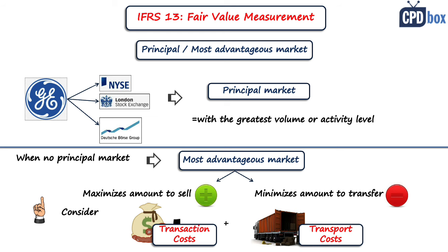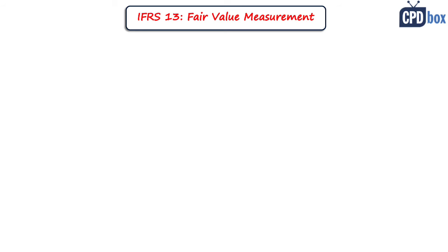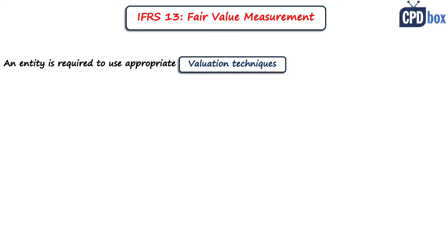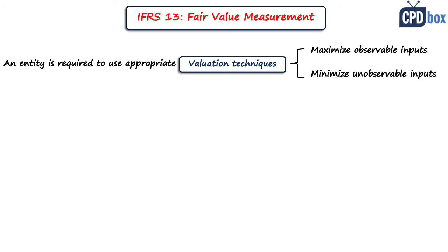IFRS 13 also provides guidance on market participants, orderly transactions, and how to set fair value on initial recognition. Regarding valuation techniques, when determining fair value you must use techniques appropriate to the circumstances and data available. These techniques must maximize the use of relevant observable inputs — looking to the market as much as possible — and minimize the use of unobservable inputs. IFRS 13 recognizes three main valuation approaches: the market approach, the cost approach, and the income approach.